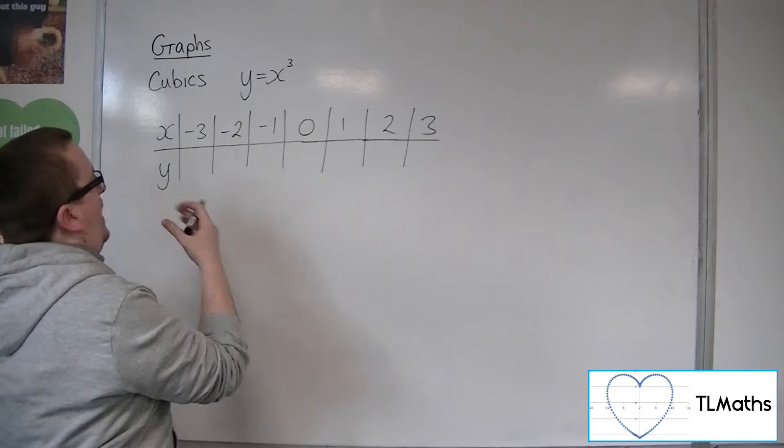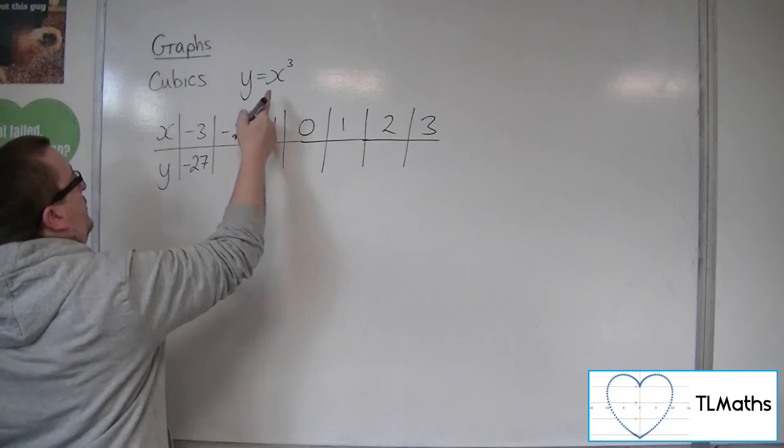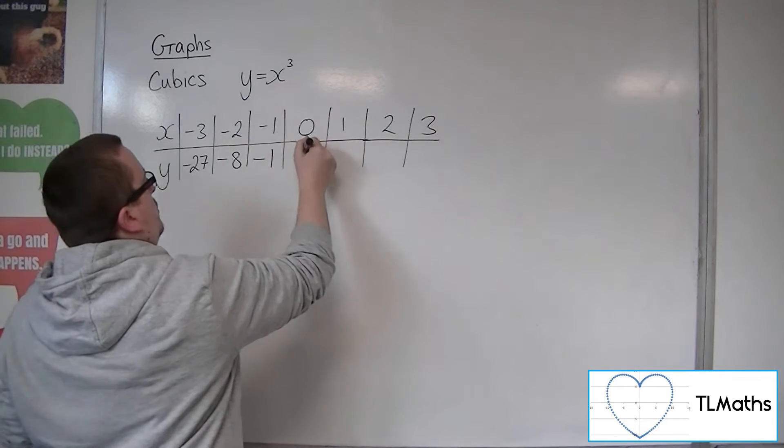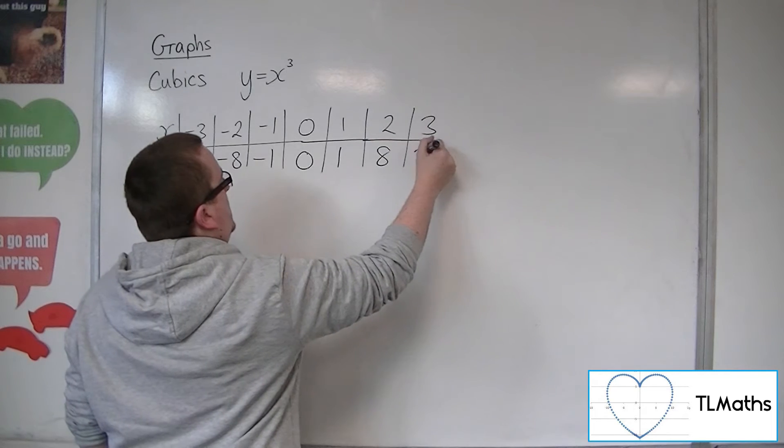So when x is minus 3, we get minus 3 cubed, so minus 27. Minus 2 cubed is minus 8, minus 1 cubed is minus 1, 0 cubed is 0, 1 cubed is 1, 2 cubed is 8, and 3 cubed is 27.